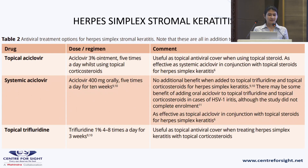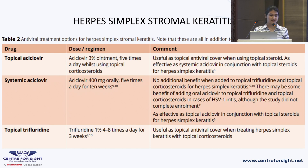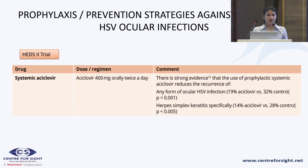Herpes simplex stromal keratitis requires topical acyclovir, systemic acyclovir, and topical trifluridine, always in addition with topical corticosteroids. Acyclovir 3% ointment, systemic acyclovir 400 mg orally 5 times a day for 10 weeks, and topical trifluridine 1% 4 to 8 times a day for 3 weeks. For prophylaxis, after the HEDS trial, systemic acyclovir was proven to be useful — acyclovir 400 mg orally twice a day.